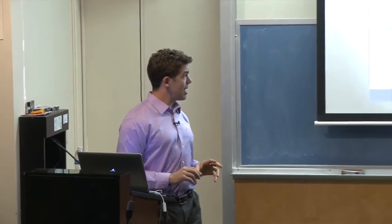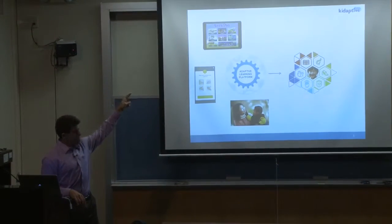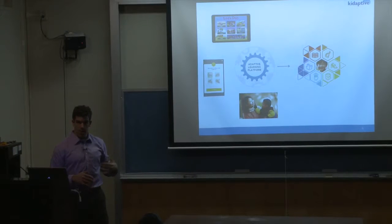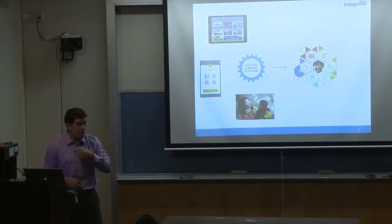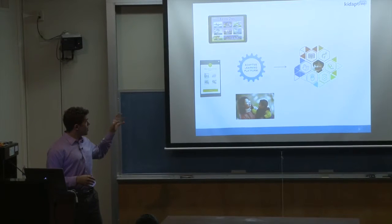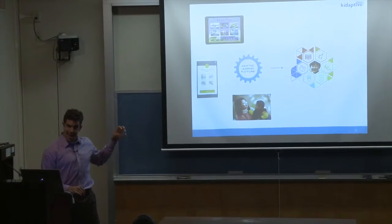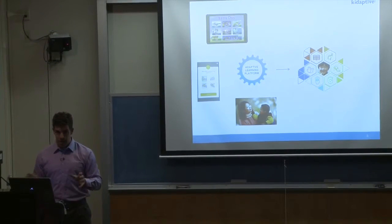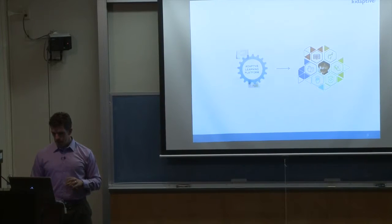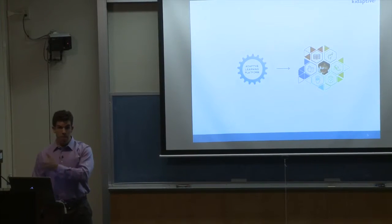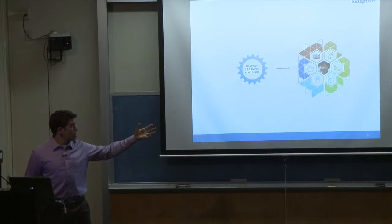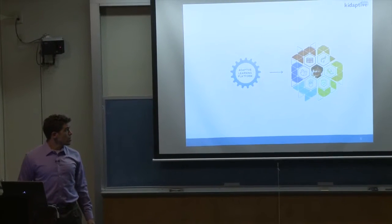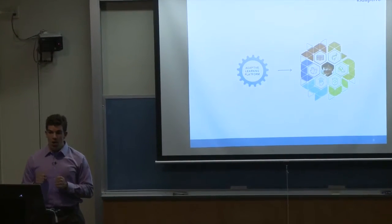Our adaptive learning platform combines digital gameplay with questions we ask parents about their children's experiences - things you can't figure out from gameplay alone, like how a child holds a pencil, sits in place, delays gratification, or can zip up a coat. Those parent observations help us triangulate where the student is across about 75 dimensions of learning. The visualization on the right represents our early learning core skills framework.